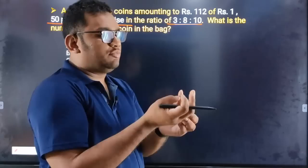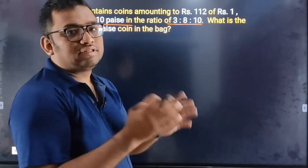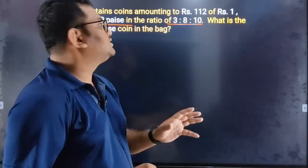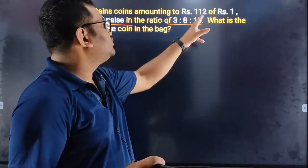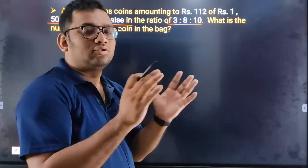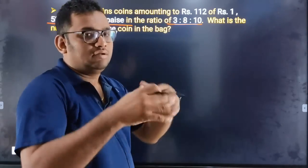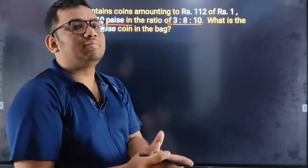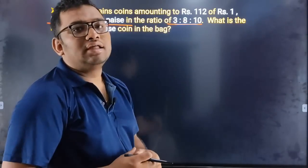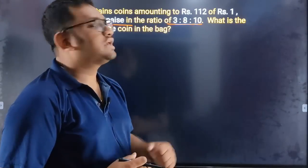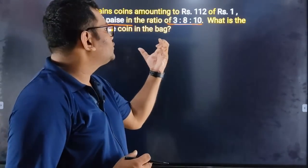This bank contains 1, 5, and 12 point denominations. The total of 3, 8, and 10 denominations is about 12. I saw the total of 50 points.